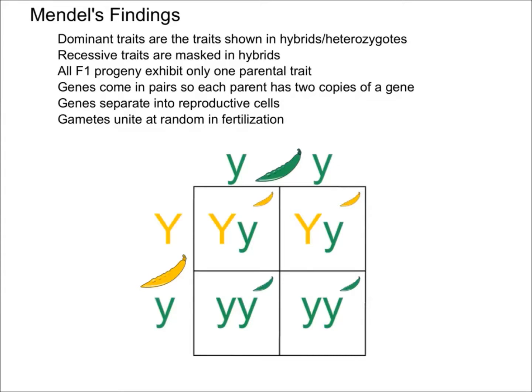More specifically, Mendel studied true breeding varieties, which means that they are homozygous — in other words, if they self-fertilize, they produce only progeny like themselves.